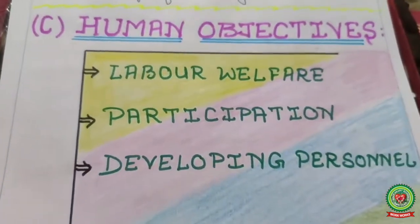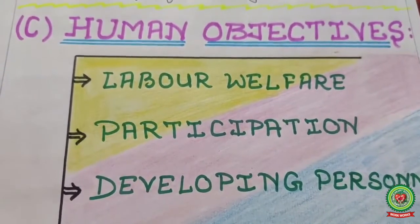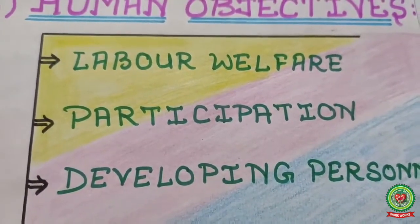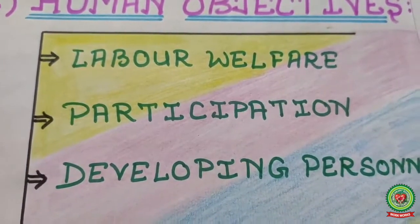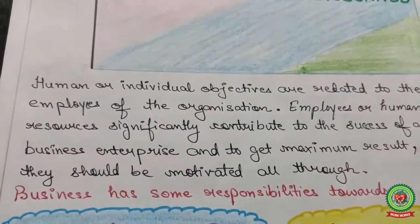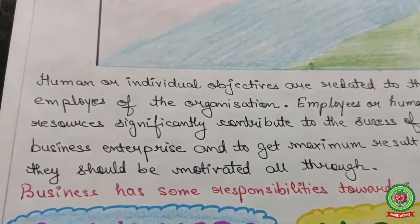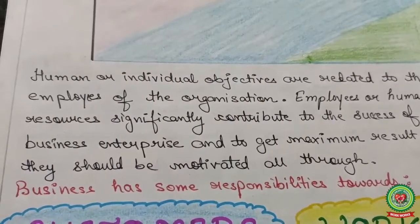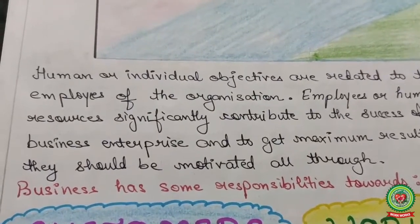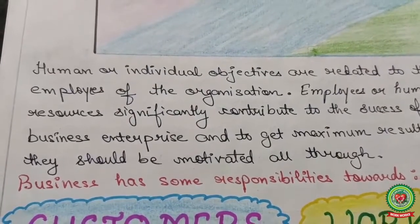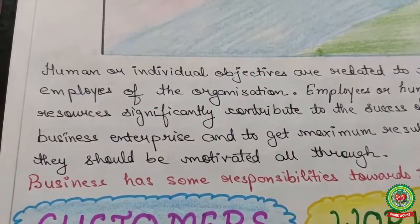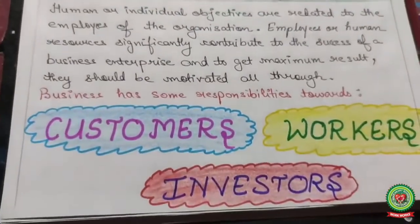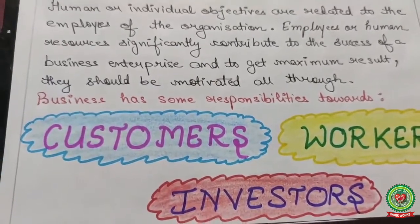The third objective is the human objective. From its name it is clear — human means when the business deals with human beings: employees and laborers. Points covered under this objective include labor welfare, participation, and developing personnel. Human or individual objectives are related to the employees of the organization. Employees significantly contribute to the success of a business enterprise, and to get maximum results they should be motivated with financial incentives and promotions.